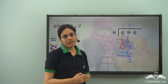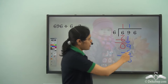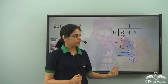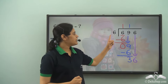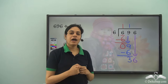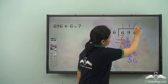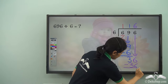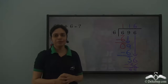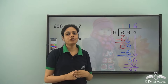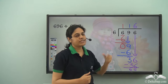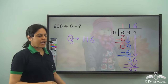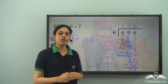9 minus 6 gives me 3, and I have a 6 here, so I bring it down to get 36. How many times does 6 go into 36? 6 into 6 is 36. So I write 6 here and subtract to get 0. So 116 is the quotient when I divide 696 by 6.